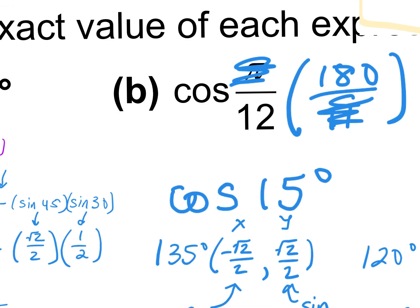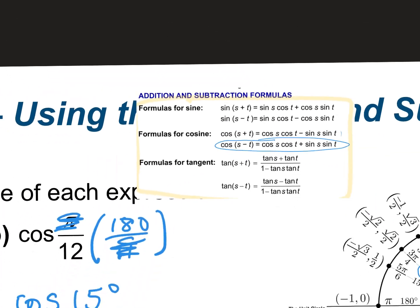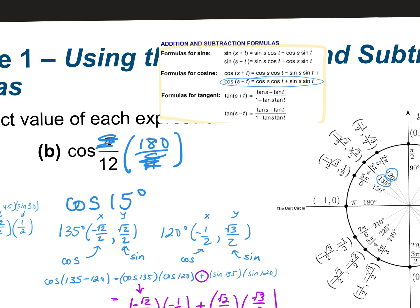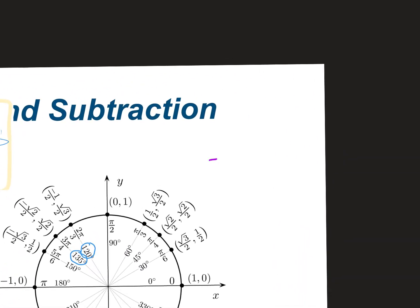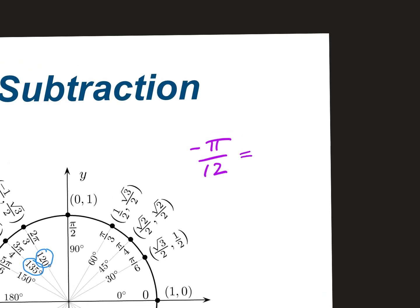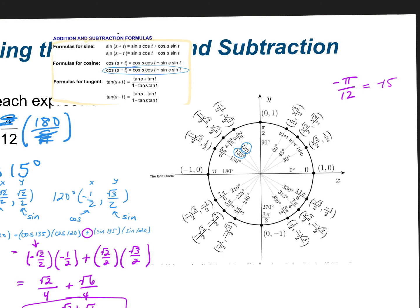If the problem said sine instead of cosine, you'd use the sine formula. On your WebAssign I put a few tangent problems in there — I'll go over tangent tomorrow. Quick note: if it said negative pi over 12, converting gives negative 15 degrees, so you'd go the opposite direction. I'm not going to give you any negatives on your quiz — I just threw one in on WebAssign for you to see. The negative just means direction.